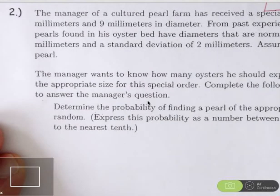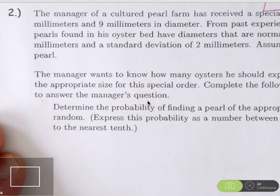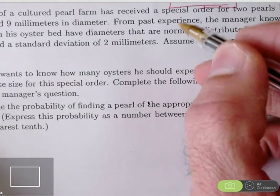To start with, it's important to read and organize and find all the information you're going to need. We have the manager of a cultured pearl farm. He has a special order for pearls between 7 millimeters and 9 millimeters in diameter. He knows from past experience that pearls in his oyster bed have diameters that are normally distributed. There is our shape.